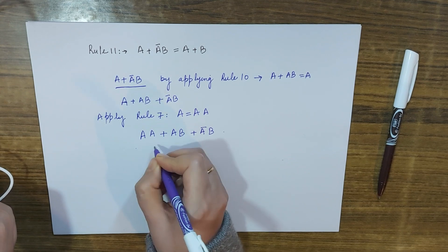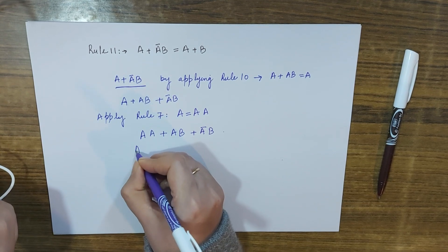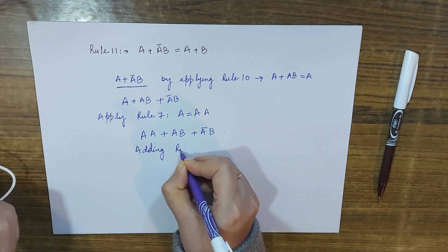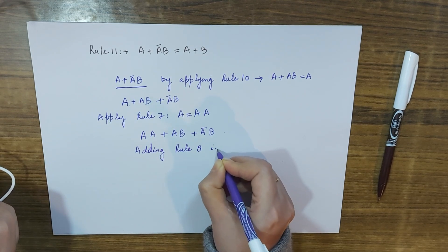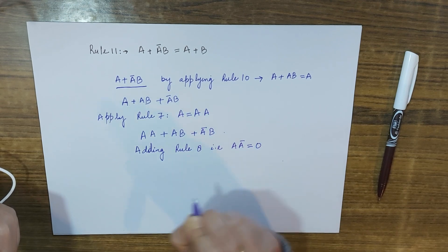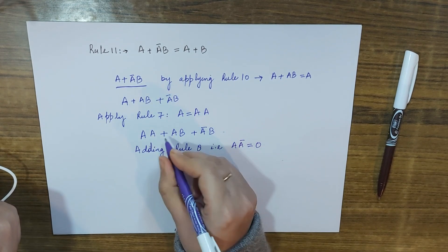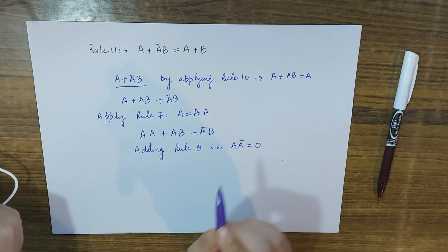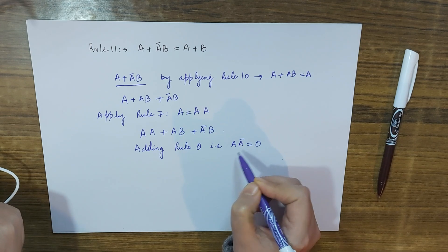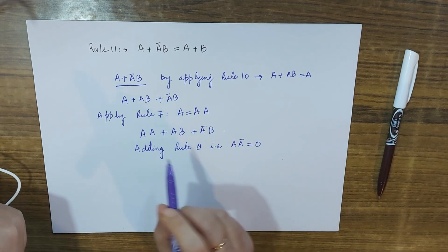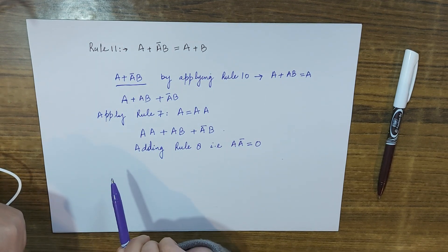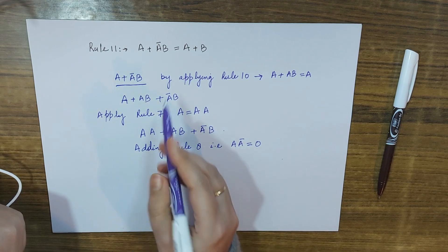Now I will add Rule 8. Rule 8 states A·A-complement equals 0. If I add 0 to these terms it makes no difference, so I will add the term A·A-complement. I am doing all these steps just to get A plus B from A plus A-complement B in order to prove the rule.